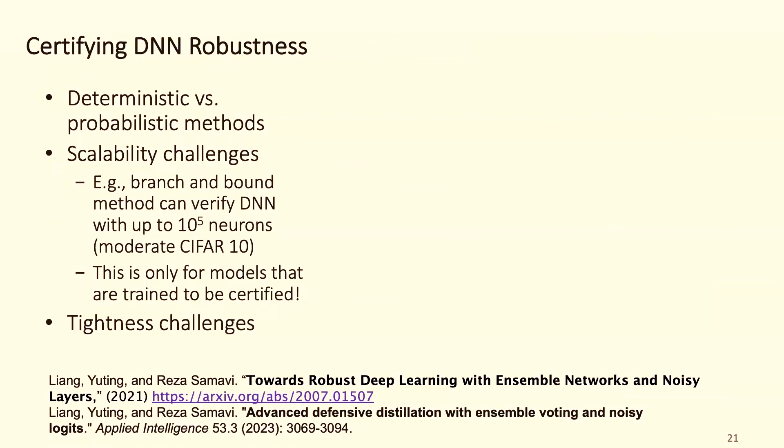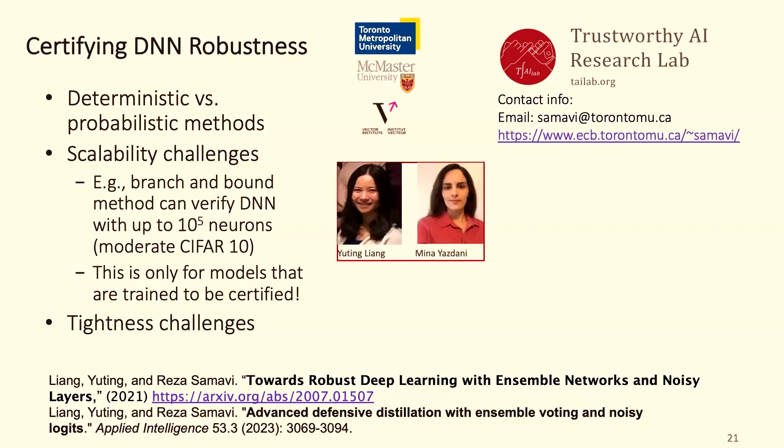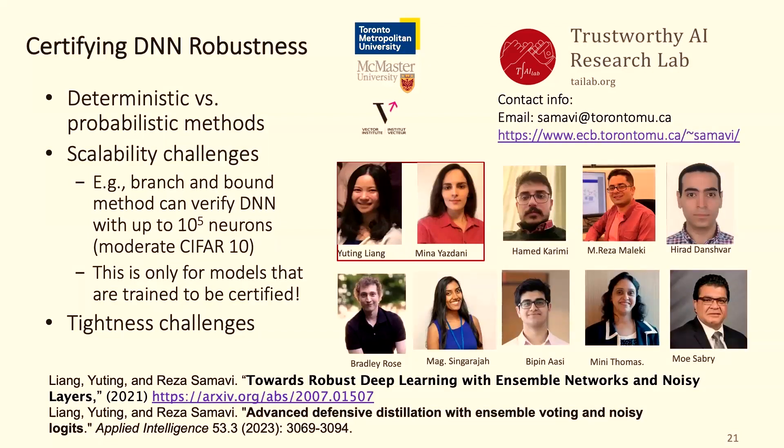From the research perspective, three main challenges we are dealing with right now are deterministic versus probabilistic method, the scalability challenges that even the easier or the most common method, the bound that generates, this branch and bound can only solve problems with 10 to the 5 neurons, which is the moderate CIFAR-10 type of problem. We don't have that. And also the tightness challenges. The work that I presented is in these two papers if you are interested, and the codes are available. Mostly based on this with the two of my students that are now graduated and other students working with me. With that note, I stop here, and if there's any questions.